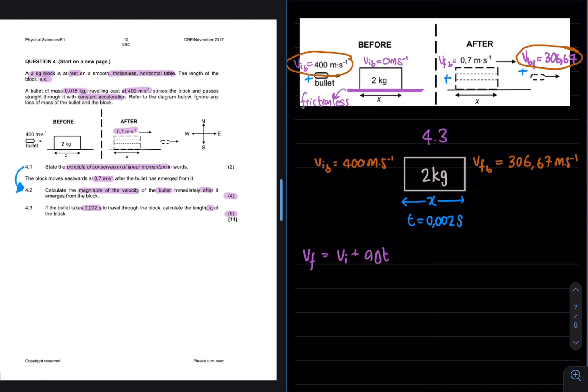Which is actually deceleration, so we are expecting to get a negative answer, which gives a deceleration of 46,665 meters per second squared. We can now use this acceleration in either one of the following equations.